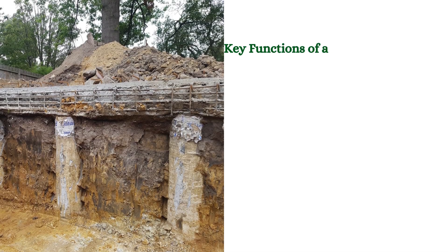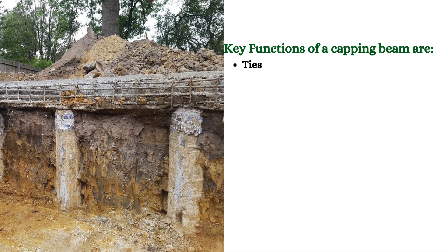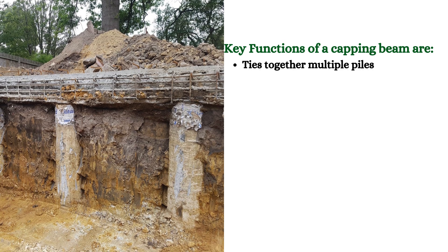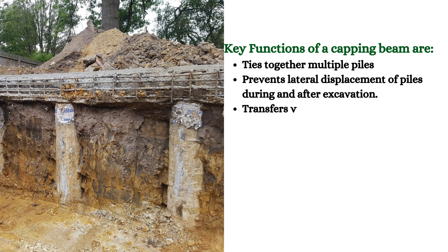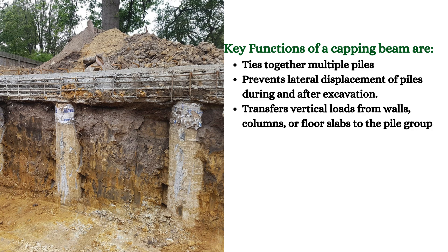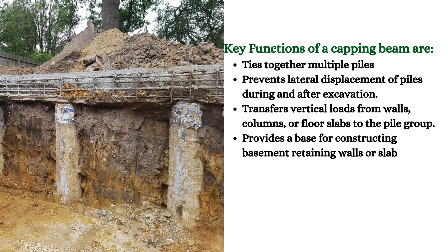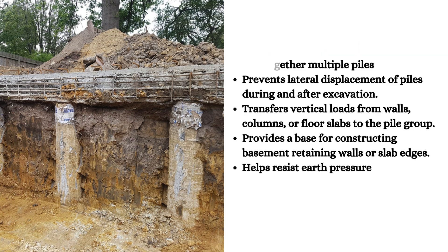Key functions of a capping beam are: it ties together multiple piles, ensuring they act as a unified support system; prevents lateral displacement of piles during and after excavation; transfers vertical loads from walls, columns, or floor slabs to the pile group; provides a base for constructing basement retaining walls or slab edges; and helps resist earth pressure, especially near property boundaries or in excavation support systems.